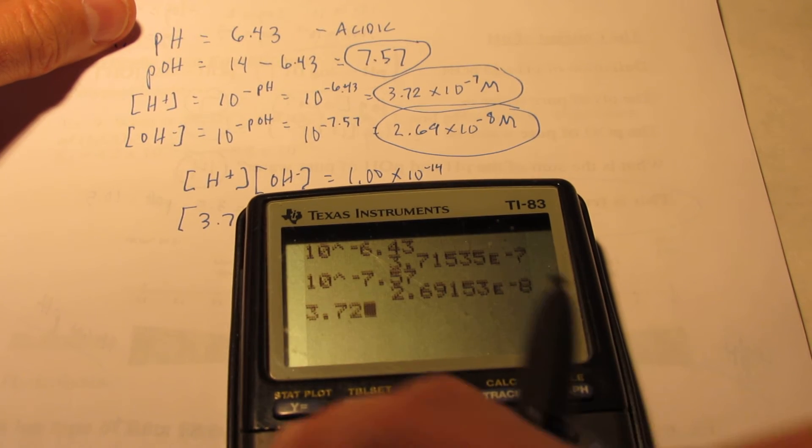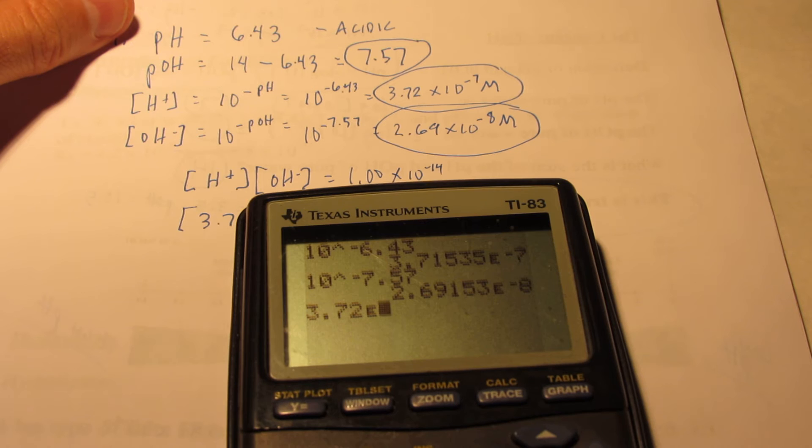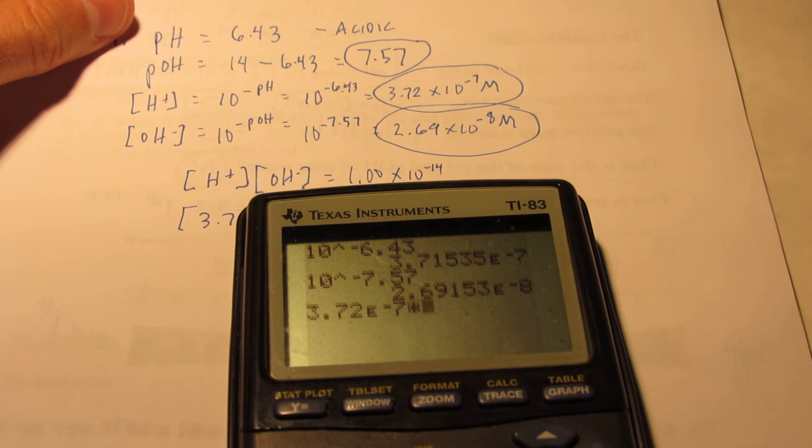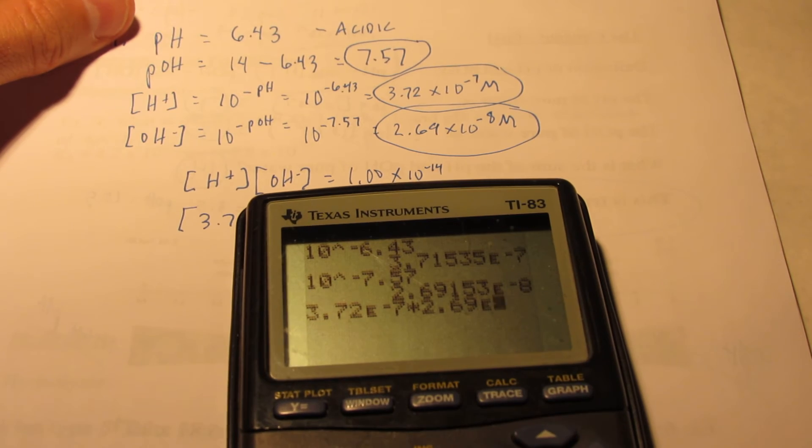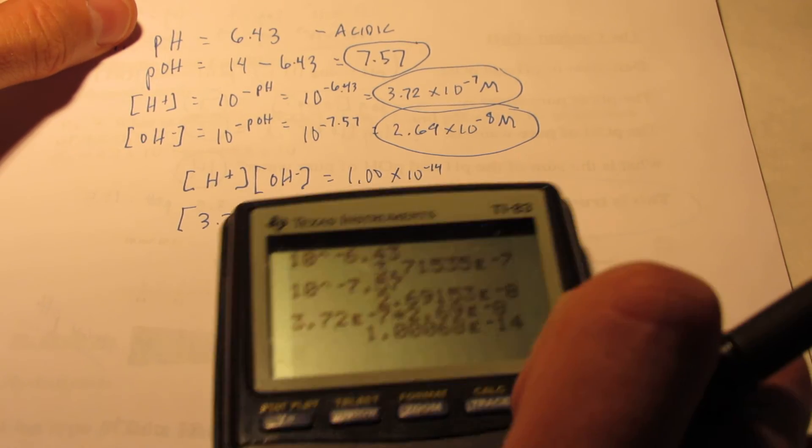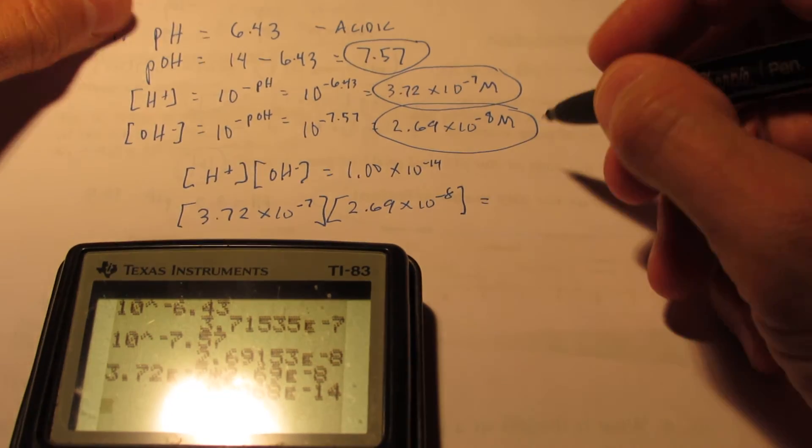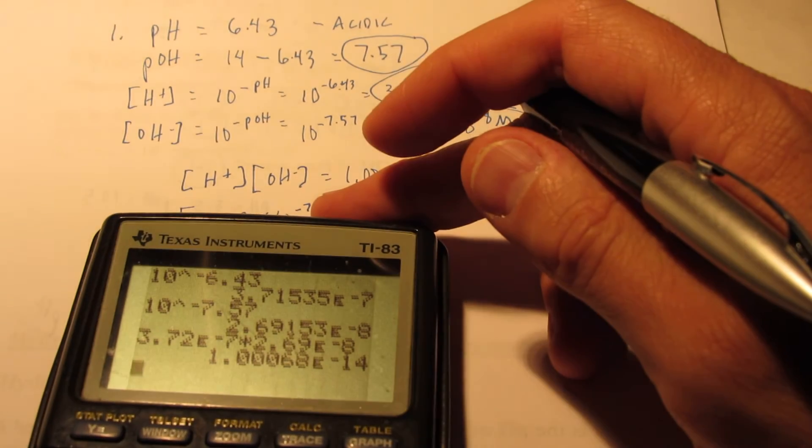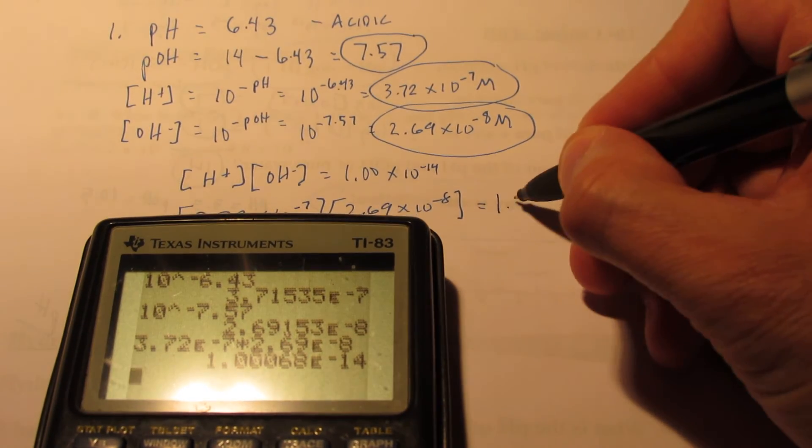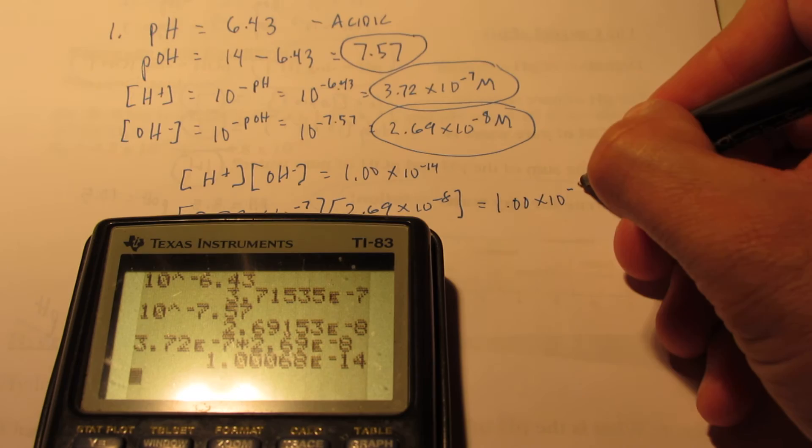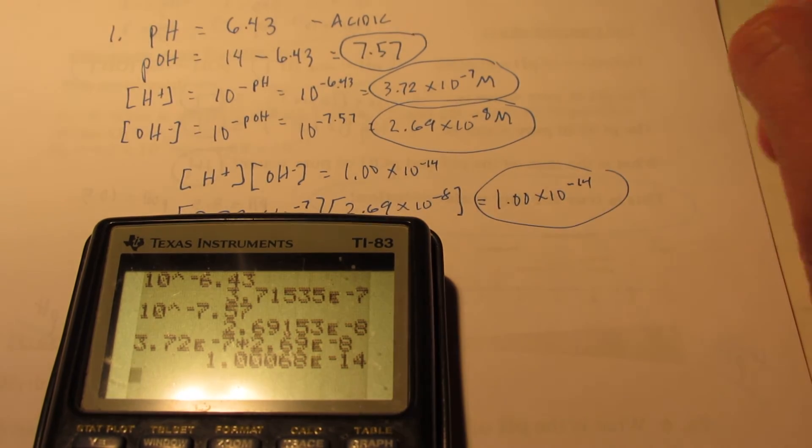3.72 second EE negative 7 times 2.69 second EE negative 8. And we get, sure enough, oh, we got a little bit of a glare there. Can you see it? 1.00 times 10 to the negative 14, just as we suspected.